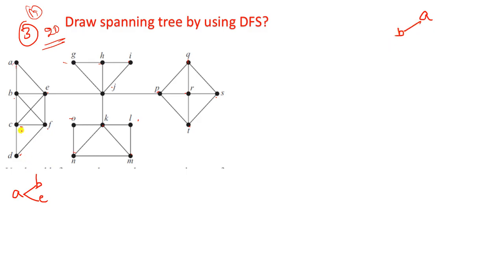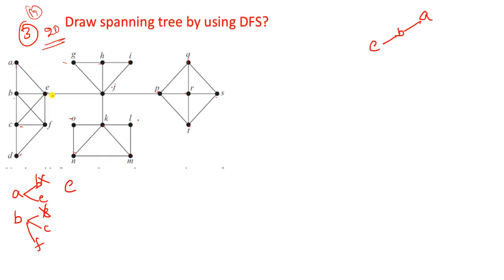We take B. Explore B - B has E, C, F, and A. A is already visited. Remaining are E, C, and F. We take E. Explore E - E has incident vertices A and B, both already visited. The remaining ones are J and F. We can take F. Insert F here. F is visited.